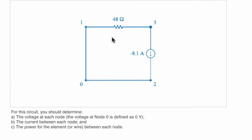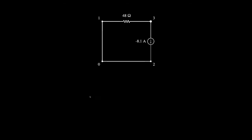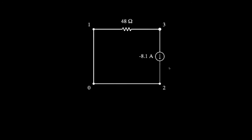Let's start with a single loop circuit that contains one resistor in series with a current source. As instructed in the problem, we'll use the principle of Ohm's law to solve for the node voltages, the node-to-node currents, and the element powers. Here's our simple circuit with a 48-ohm resistor in series with a source that provides 8.1 amps of current.